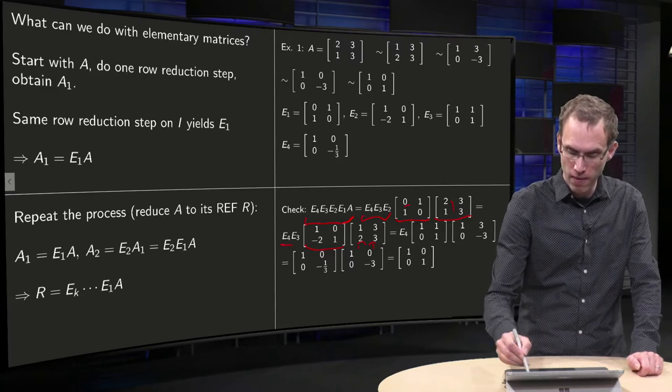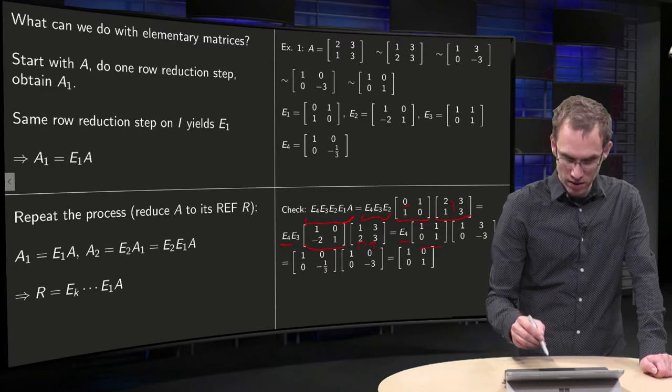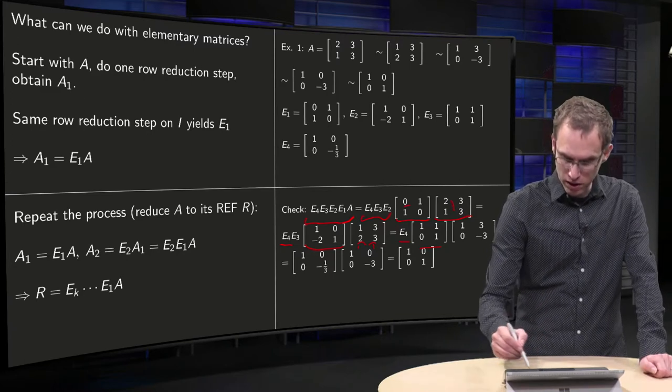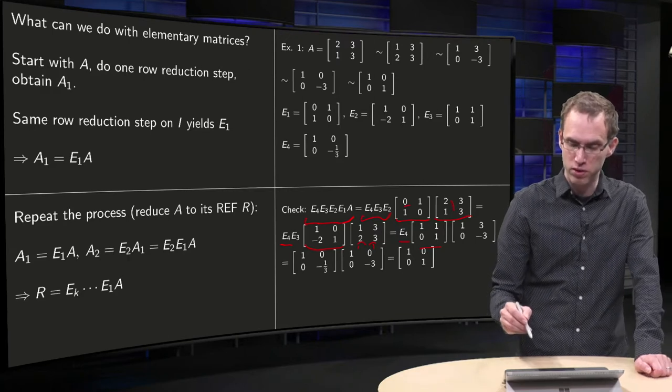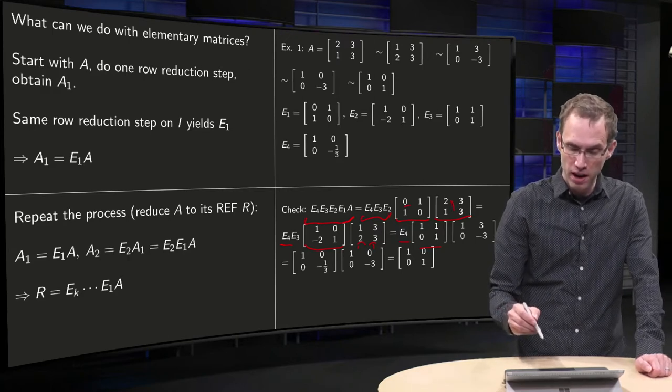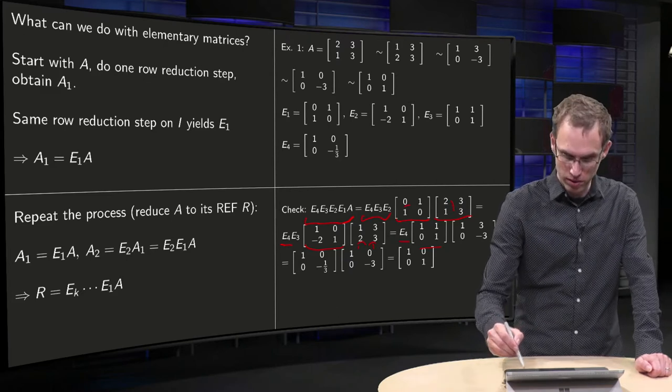Copy E4, write down over here what E3 is. And compute the product. We get a 1, 0 inner product with 1, 2 gives us a 1, minus 2, 1 inner product with 2, 1 gives us a 0. And 1, 0 inner product with 3, 3 gives us 3 and the other one minus 3, so then we are over here.